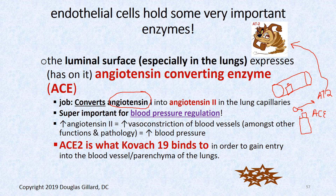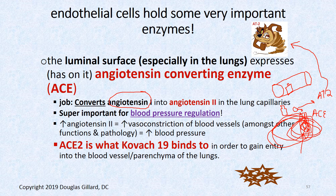Who else uses ACE? COVID-19 also binds to the ACE receptor on endothelial cells — that's how it gains entry. Once it binds, it burrows into the cell, the virus multiplies, the body attacks, you get wicked inflammation that spills out into the alveoli all around, and for some people it becomes a big mess.